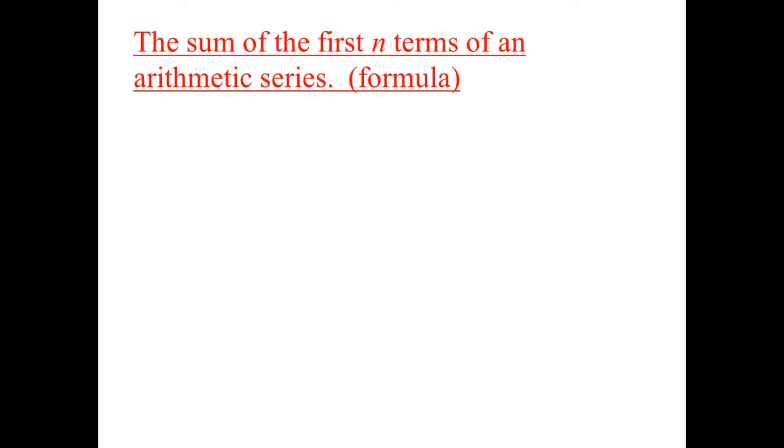Now, on to the formula. We want to find the sum of N terms in general of an arithmetic series. Well, here are the N terms. The first term is A. The second term is A plus D. The third term is A plus another D, A plus 2D, and on and on, all the way up to the Nth term, which we know from the formula is A plus N minus 1 times D.